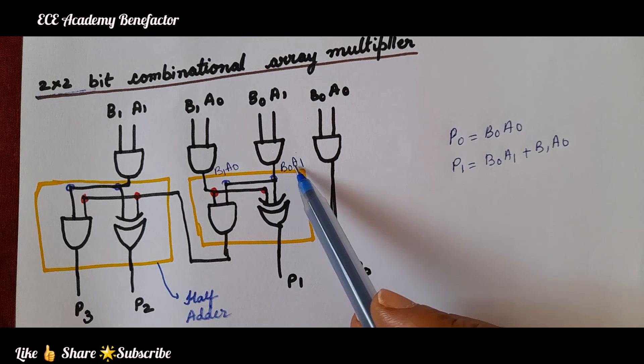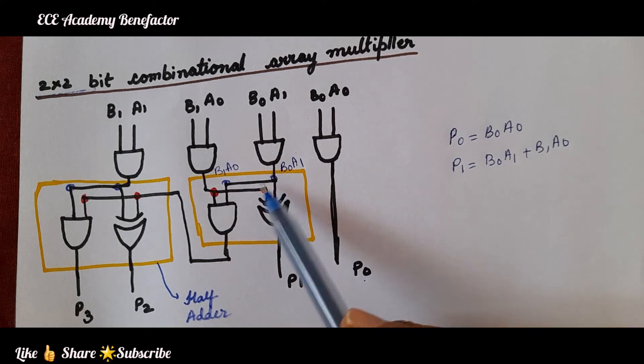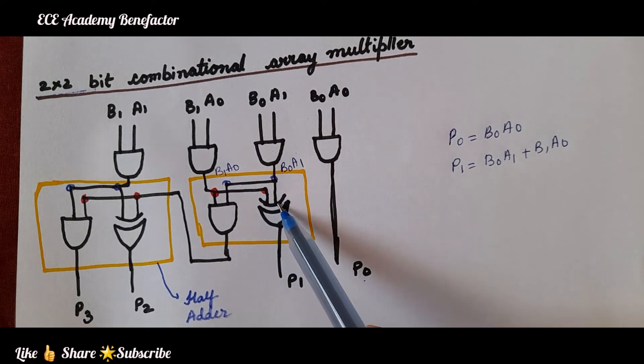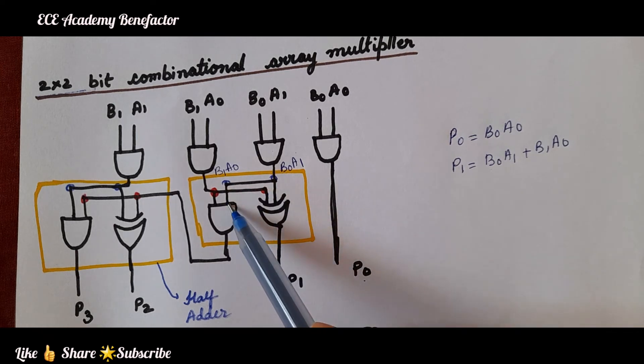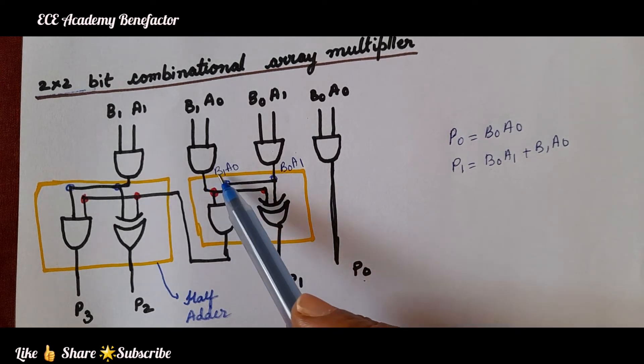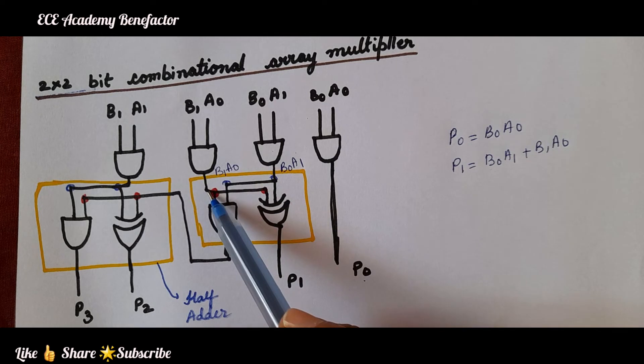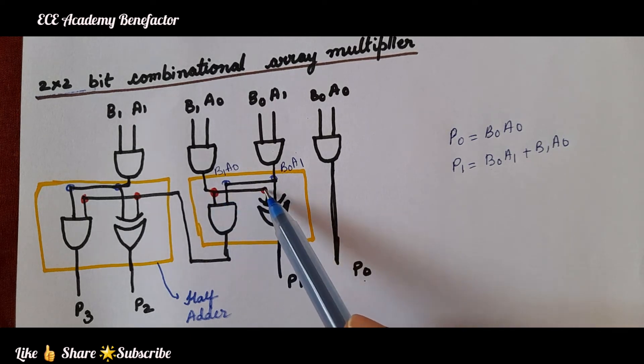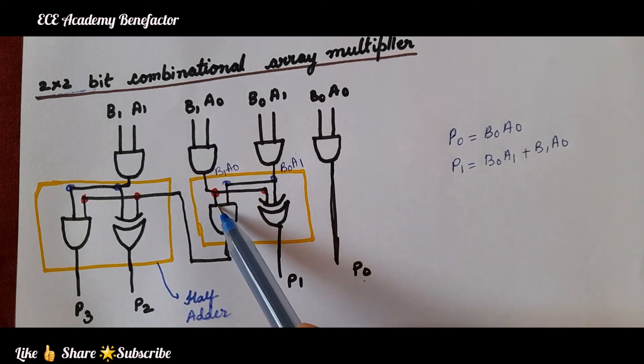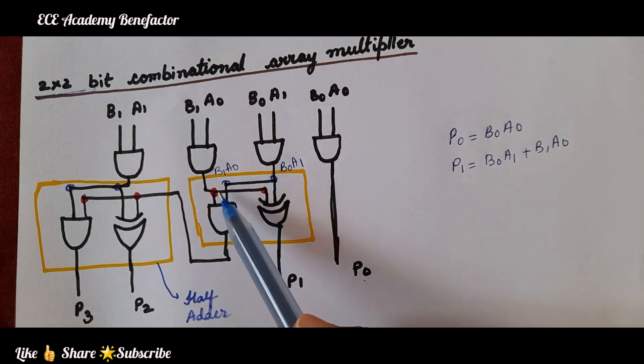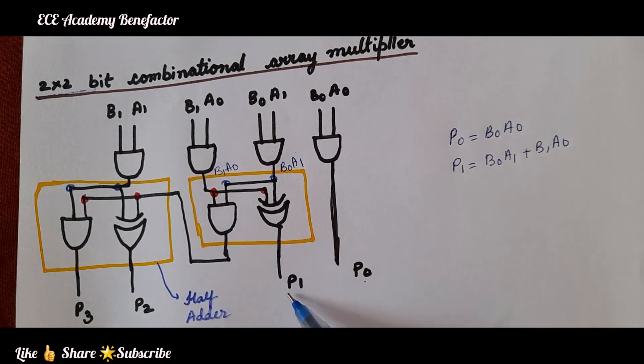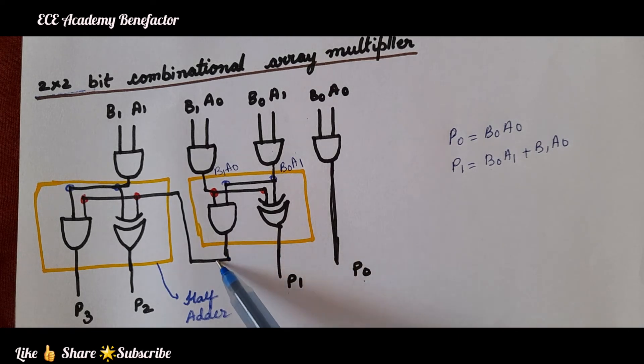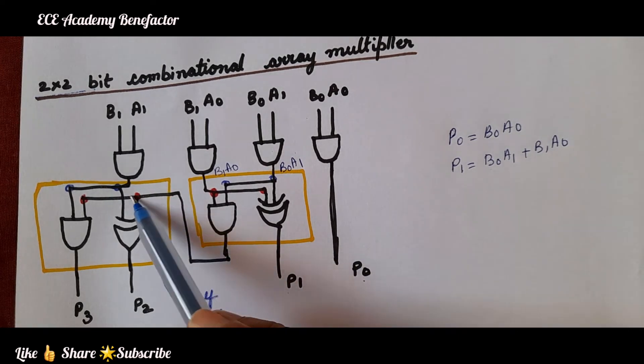The term b0a1 is coming to both the gates, to XOR gate as well as to AND gate. Likewise b1a0, this term is going to both the gates, XOR gate and AND gate. Both the terms are going to both the gates. The sum will be p1 and the carry is transmitted to the next half adder.